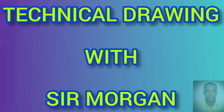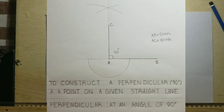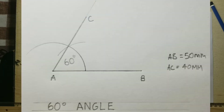Greetings again everyone. Today I'll be showing you how to construct a perpendicular at a point on a given straight line. A perpendicular is a line that will be drawn at an angle of 90 degrees. I will also show you how to construct a 60-degree angle.